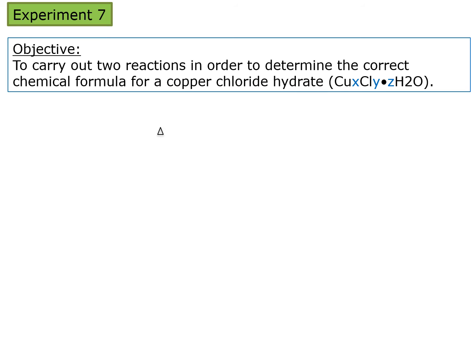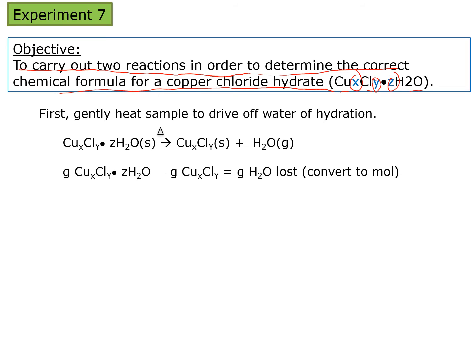The objective of experiment 7 is to carry out two chemical reactions in order to determine the correct chemical formula for a copper chloride hydrate. This formula has X, Y, and Z representing the mole ratio of copper to chloride to water. You'll be solving for X, Y, and Z — the number of moles of each of those elements or compounds.